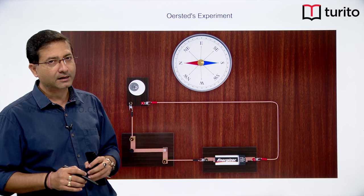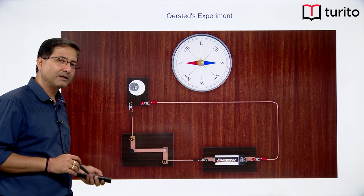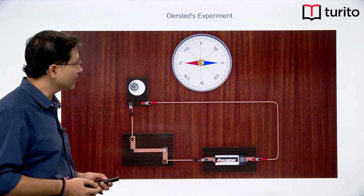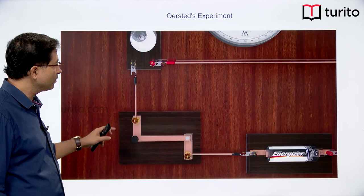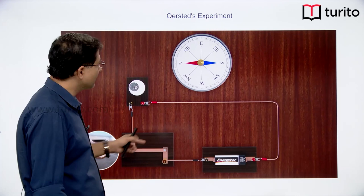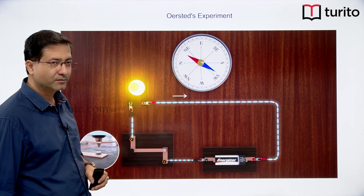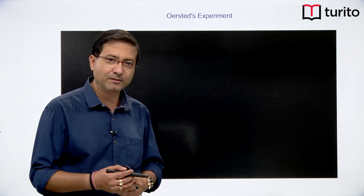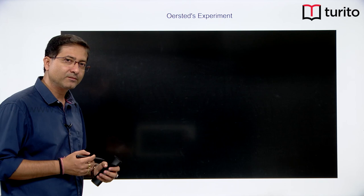Oersted once performed an experiment and realized that a current has a magnetic effect. In a circuit, when the switch is closed, current starts flowing. He observed that a magnetic compass placed near the current-carrying wire got deflected. That means the current is producing a magnetic field, which is why the magnetic needle is getting deflected.